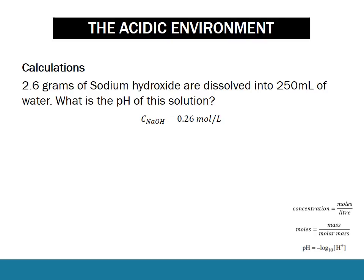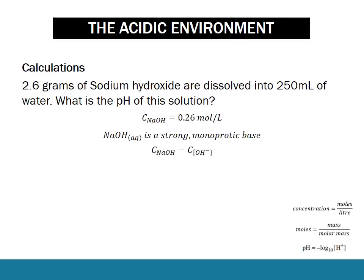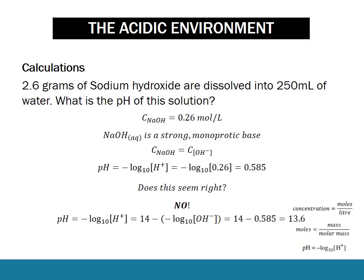To calculate the pH of the solution, we know that the concentration is going to be 0.26. But obviously it's a base, so just using the pH formula gives us 0.585 — that's not correct. Instead, we have to use 14 minus that value, because what we found is the pOH, which is different to the pH. So we use the standard pH scale and subtract what we found from 14 to get 13.4.